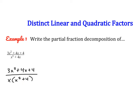The setup for this is slightly different. X is a linear factor, so that's just a normal setup — it gets its own fraction and we call it A. Each quadratic factor gets its own fraction as well, but the numerator is actually going to be a binomial, always in the form of Bx plus C, so it has an x term and a constant.